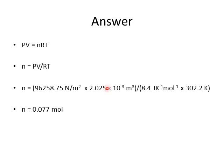The answer is n = 0.077 moles. If you didn't get that, you most likely made an error choosing your universal gas constant — this version uses joules per kelvin per mole. That's our ideal gas law. In the next presentation we'll look at diffusion. Thank you very much for joining me today.